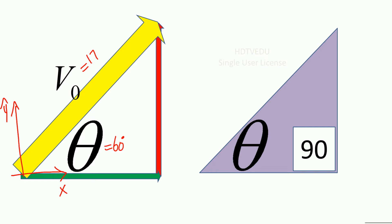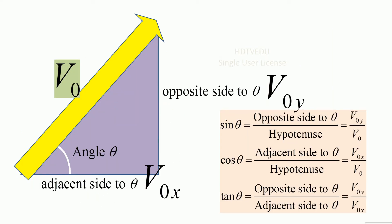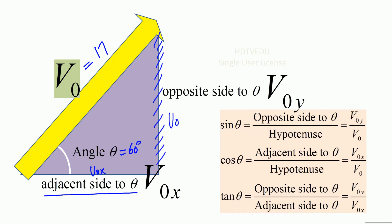What is the x-component? This is the x-component. And what is the y-component? This is the y-component. Once we have a triangle, we know that this angle theta is 60 degrees and the magnitude of the velocity vector is 17 meters per second. V0x is the adjacent side. Looking opposite to 60 degrees, that is your opposite side, and that is V0y.